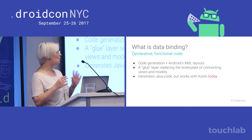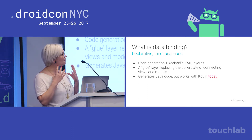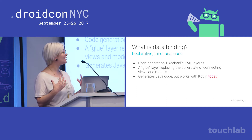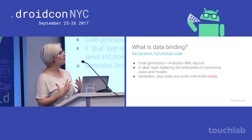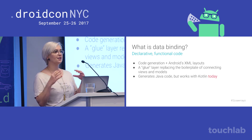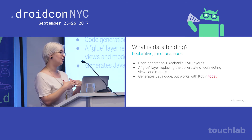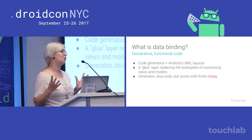So what is data binding? What are we trying to do here? The goal is declarative functional code. Data binding is basically code generation, largely from Android's XML layouts. It's a glue layer replacing all the boilerplate of connecting views and models together on Android — all the setText, findViewByID. And it's much more than that, as we'll see.